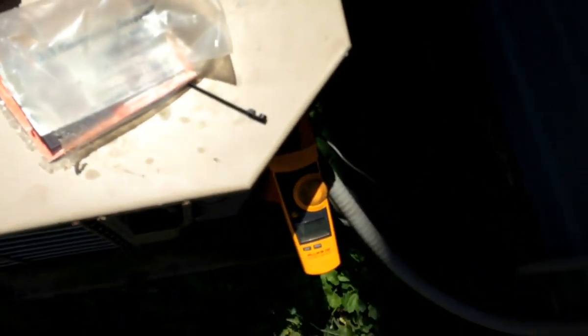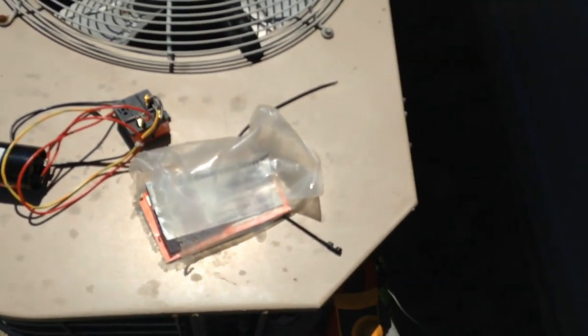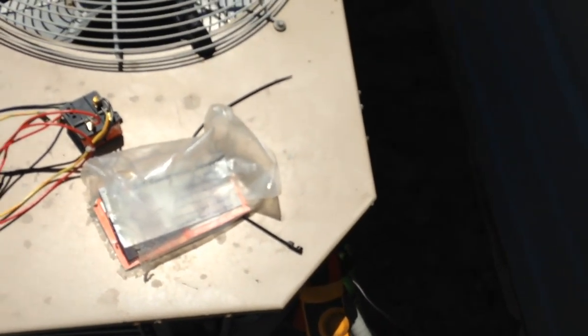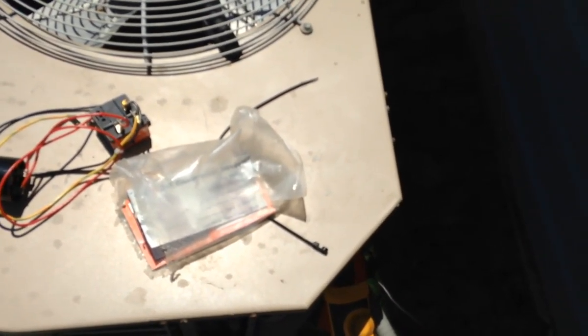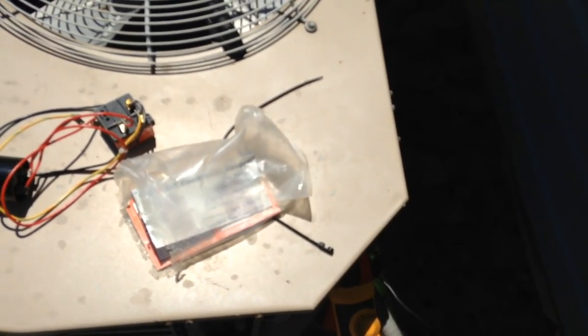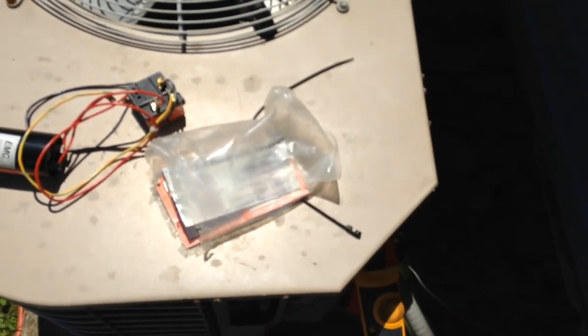The first step here is I got my Fluke 336 hooked up to the 220 line. And what I'm going to do next is force the air conditioner to come on. So in order to do that, I'm going to have to shut the video off and turn on my app to turn the thermostat on.